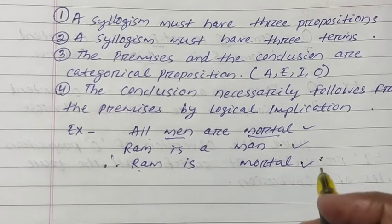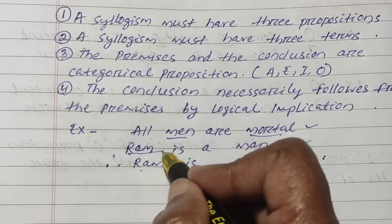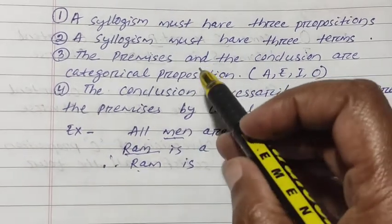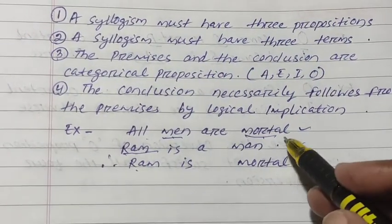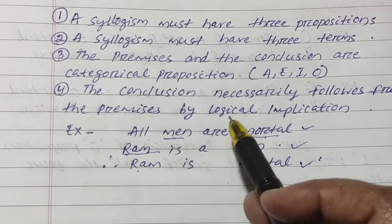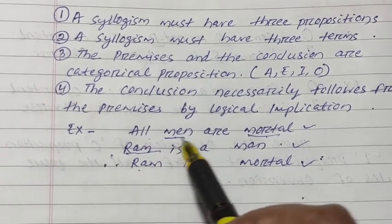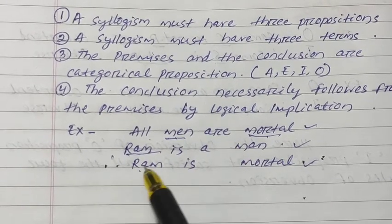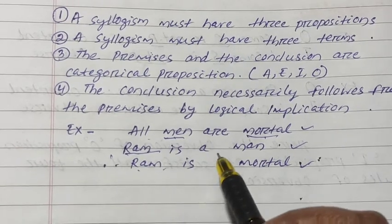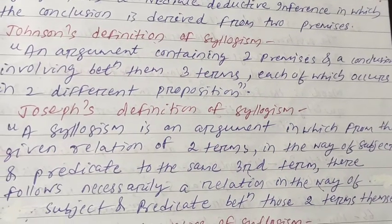In this example we have three terms: 'man,' 'mortal,' and 'Ram.' All propositions are categorical, and the conclusion 'Ram is mortal' necessarily follows from the two premises by logical implication — 'All men are mortal, Ram is a man, therefore Ram is mortal.'